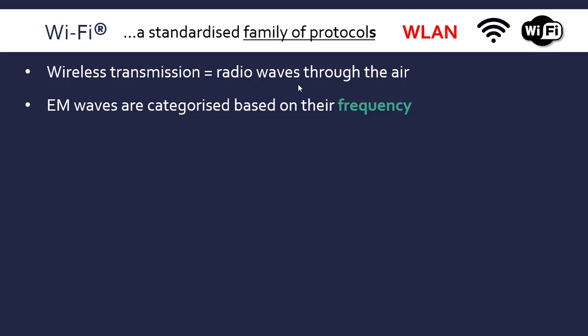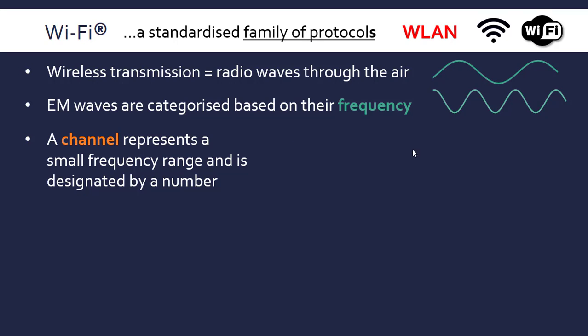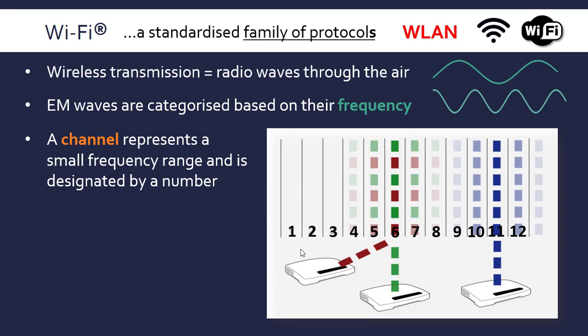Radio waves are a type of electromagnetic wave. There's a long spectrum, and the waves are based on their frequency — visible light, x-rays, microwaves, and radio waves all occupy different frequency ranges. Radio waves are a subset of electromagnetic waves, and Wi-Fi can be thought of as a subset of radio waves — just a set range of frequencies within radio waves. Even within that allocated range for Wi-Fi, you have channels. A channel is a small frequency range within Wi-Fi, designated with a number, so if there are 12 channels, each represents a small range of frequencies.